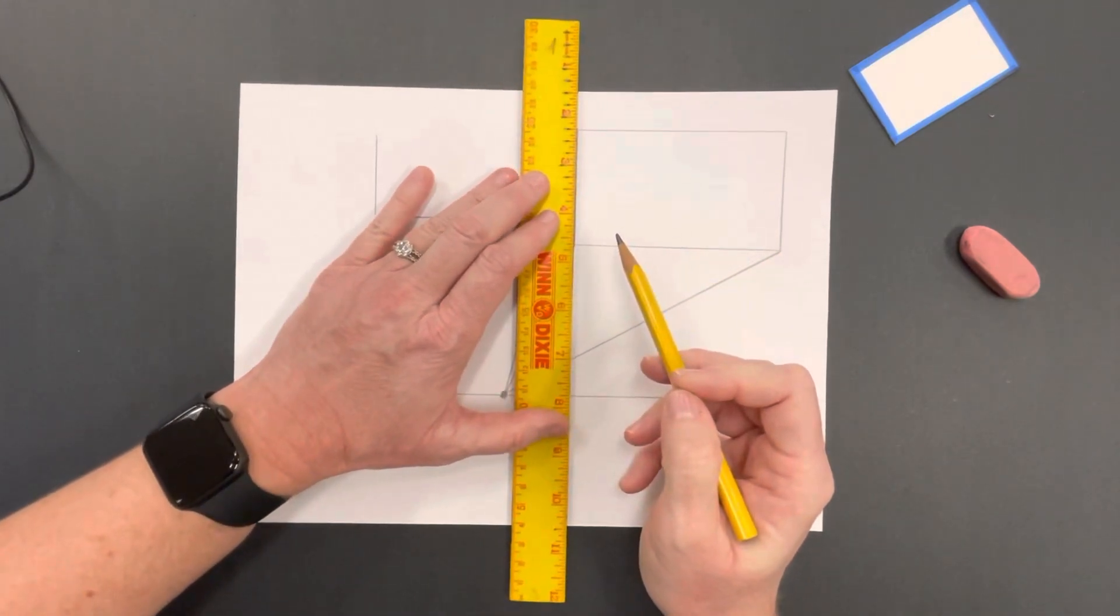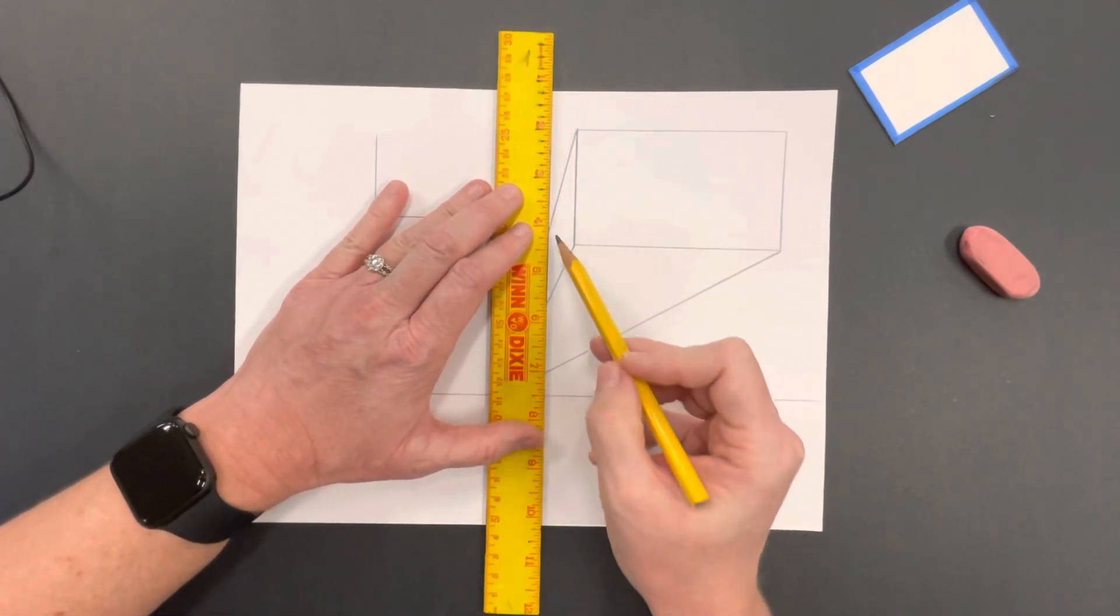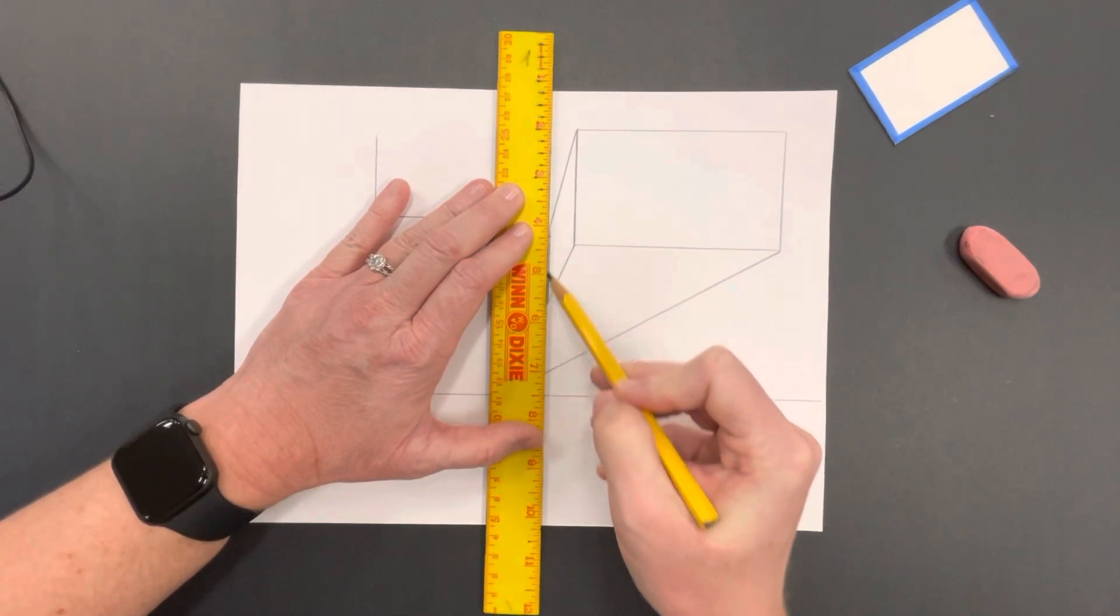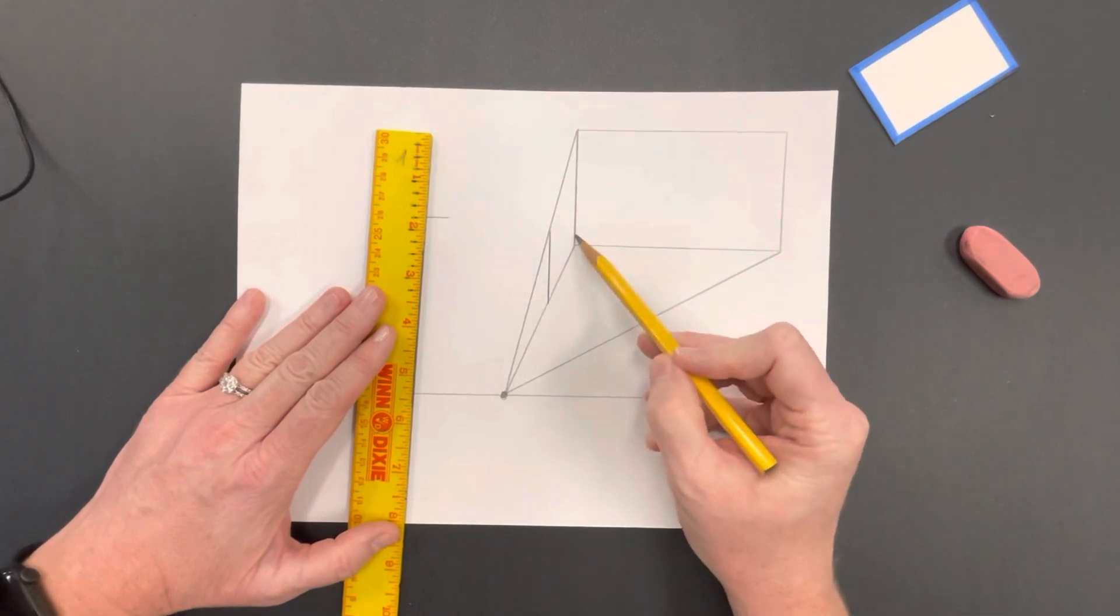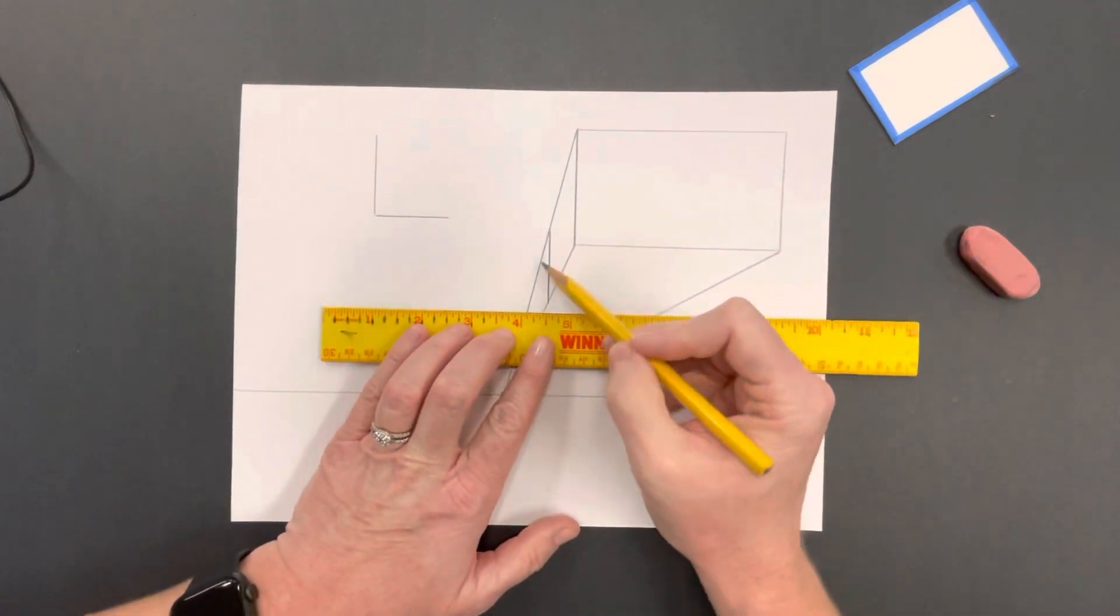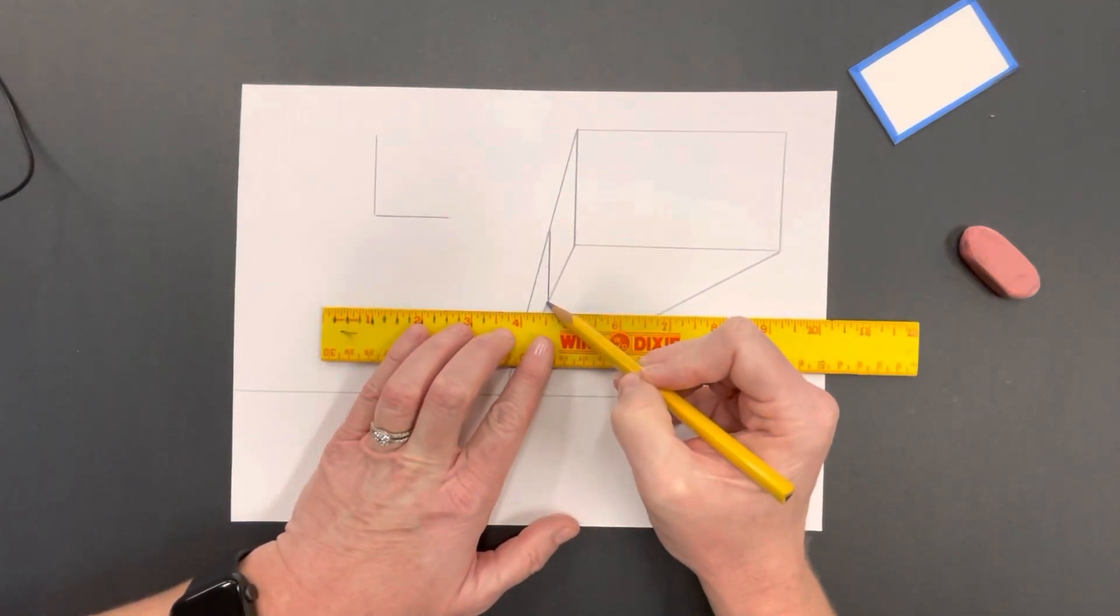I'm going to use my ruler and draw my line. You can see that these two lines are parallel - that means they stay the same distance apart. And then since it ended right here, I know I need to connect to this end part right here.